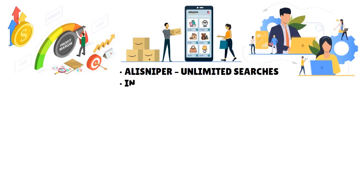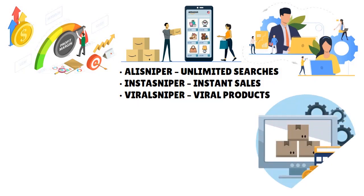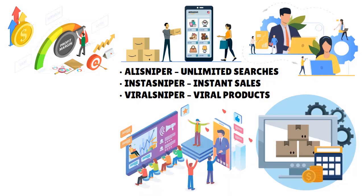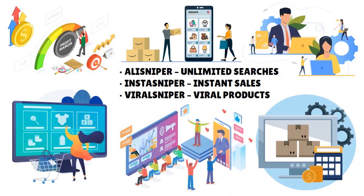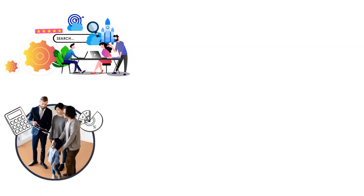In terms of eSniper pricing, you actually have three plans: AliSnapper with unlimited searches, InstaSnapper with instant sales, and ViralSnapper with viral products. Each plan lets you test things you're interested in to boost your dropshipping business. Use ViralSnapper for viral products, InstaSnapper for instant sales, and AliSnapper if you want unlimited searches across a variety of topics — it's the safe bet and can be a one-person solution.